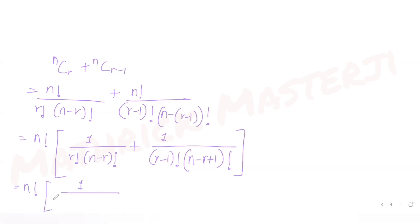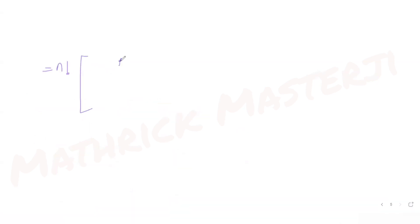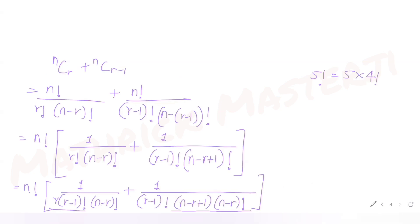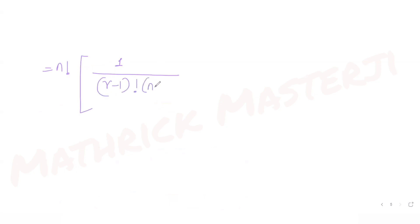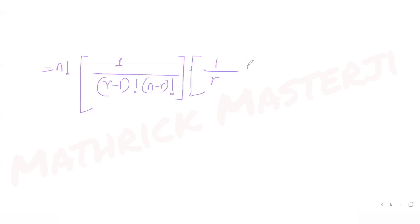We can write r! as r × (r−1)! and (n−r+1)! as (n−r+1) × (n−r)!. Taking out n! / ((r−1)! × (n−r)!) as the common factor, we are left with 1/r + 1/(n−r+1) inside the bracket.